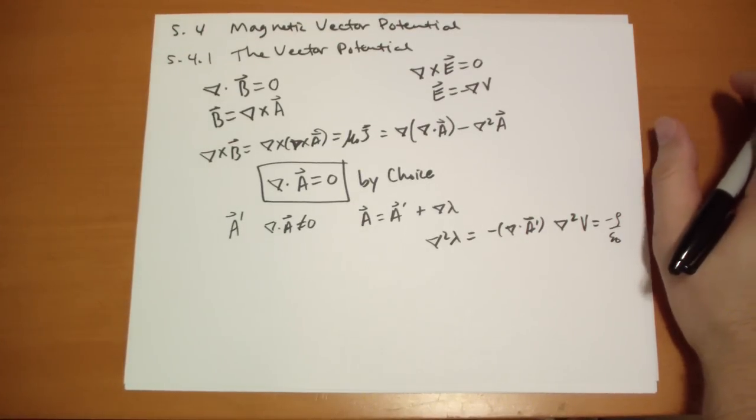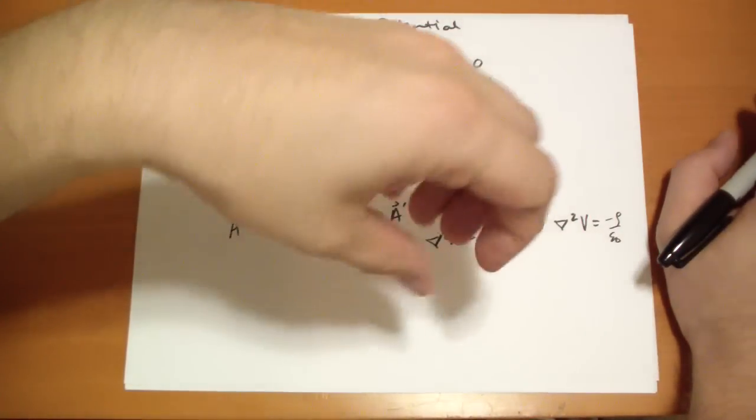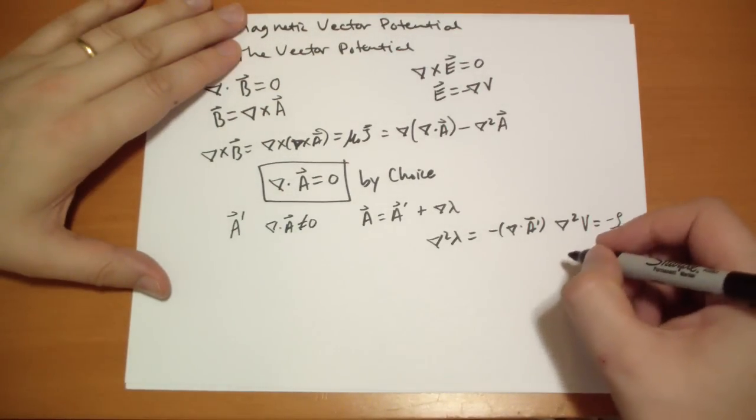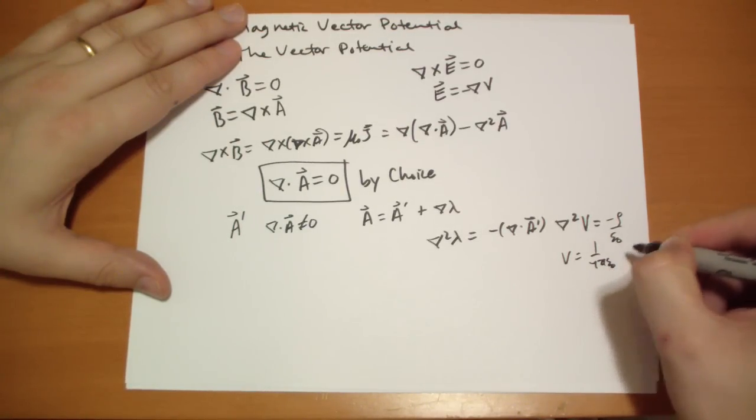This is equal to minus ρ over ε₀. And we know how to solve the Laplacian equation, or the Poisson's equation. As long as the charge goes to zero at infinity, then we can have a solution that says V is equal to 1 over 4πε₀, the integral of charge density over r dτ.